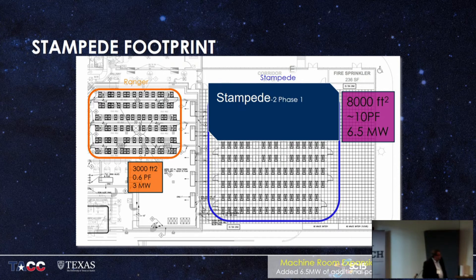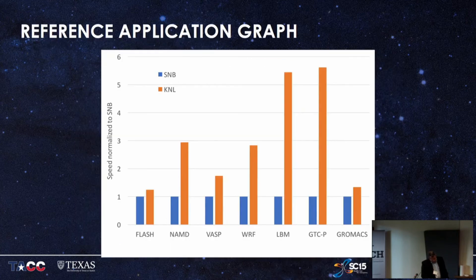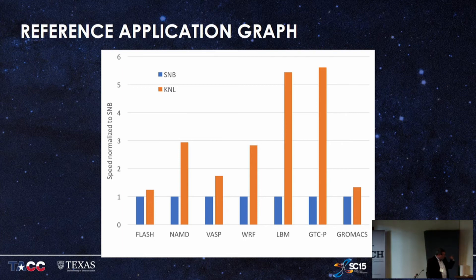Everybody wants to know about application performance. On Knights Landing, this is Stampede 1 node to Stampede 2 node comparison. If your code can really use a lot of cores well, you get three to four to five times speedup. GTC — the Gyrokinetic Turbulence Code from Princeton — and the Lattice-Boltzmann code are really good OpenMP/MPI hybrid codes that are well-tuned, so they get close to theoretical performance max. Things like Flash are sensitive to clock rate and don't do nearly as well.